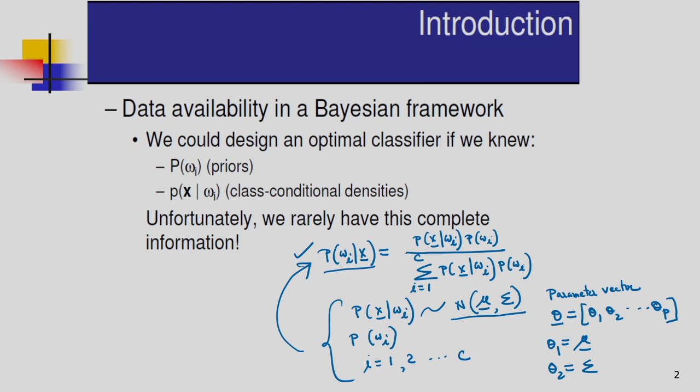In unsupervised learning, we have feature vectors and group them based on some similarity measure such as Euclidean distance. Based on this similarity measurement, we group the feature vectors — that is clustering. So one is supervised learning and another one is unsupervised learning.